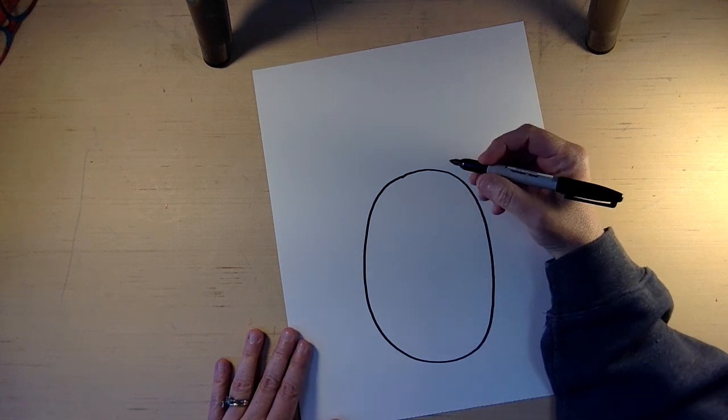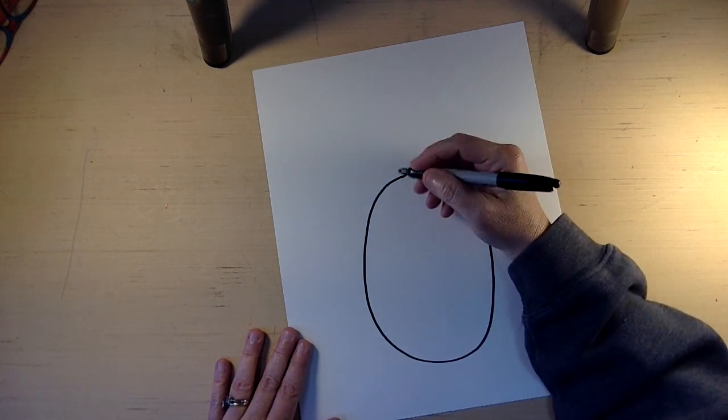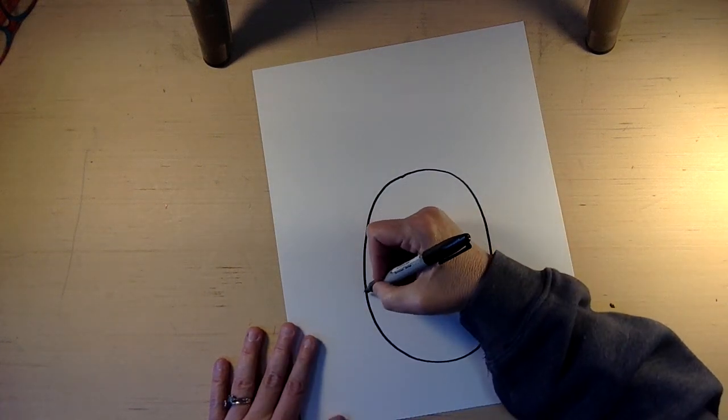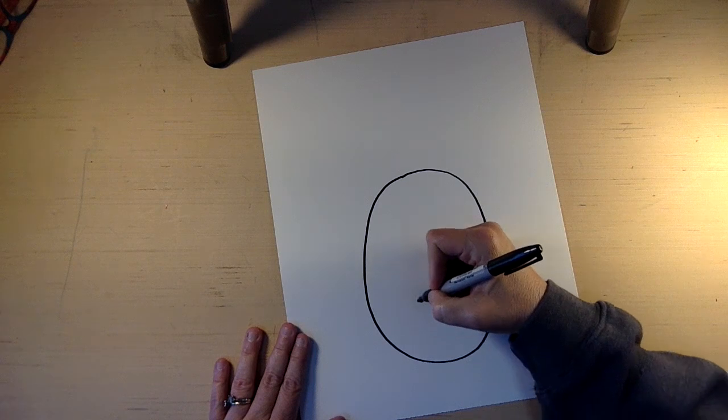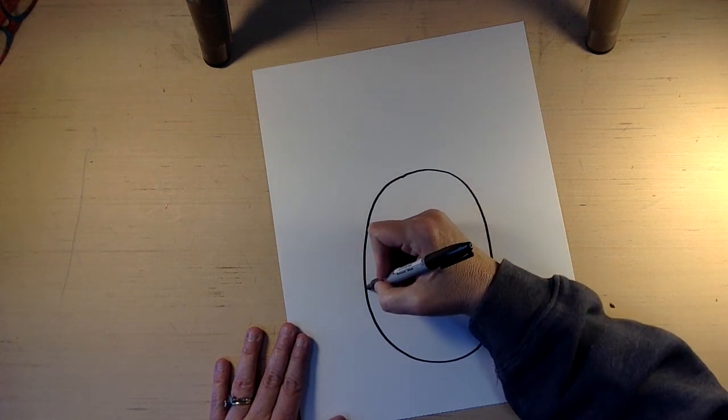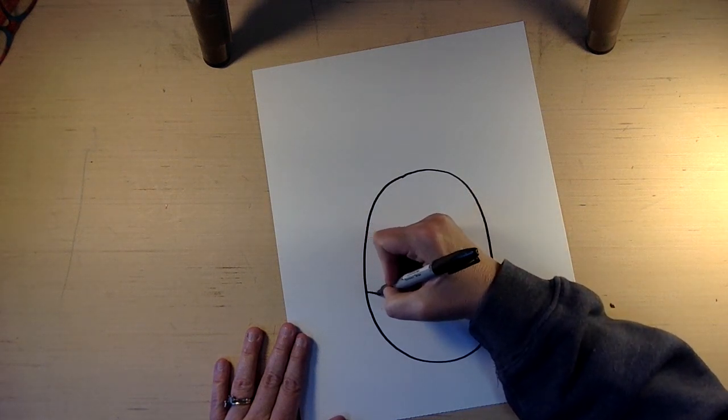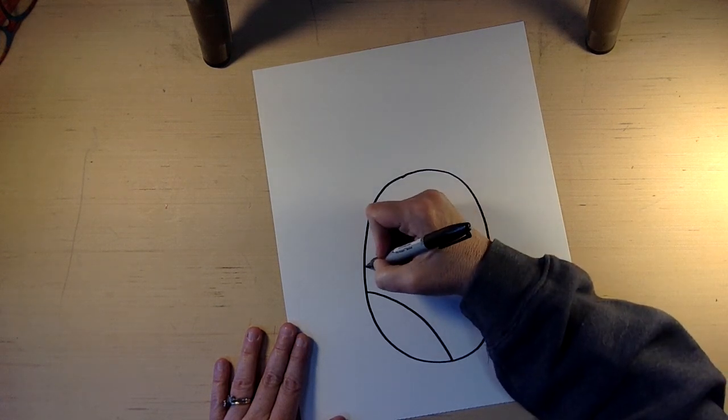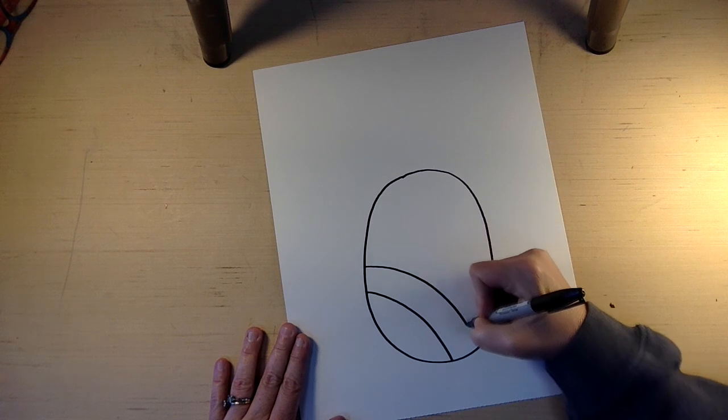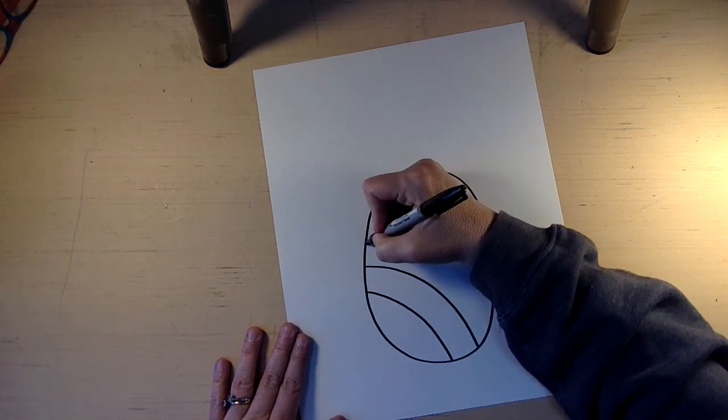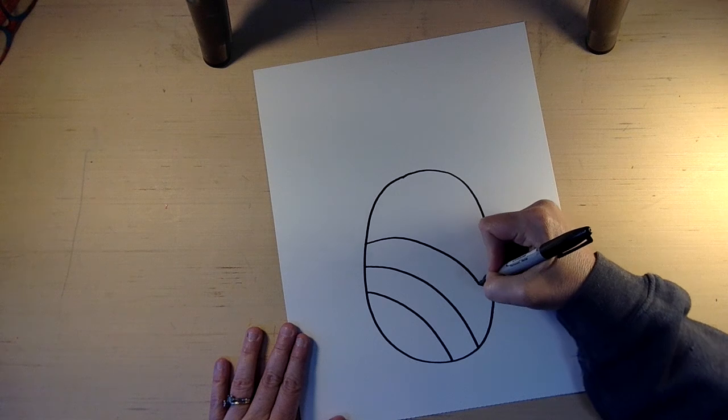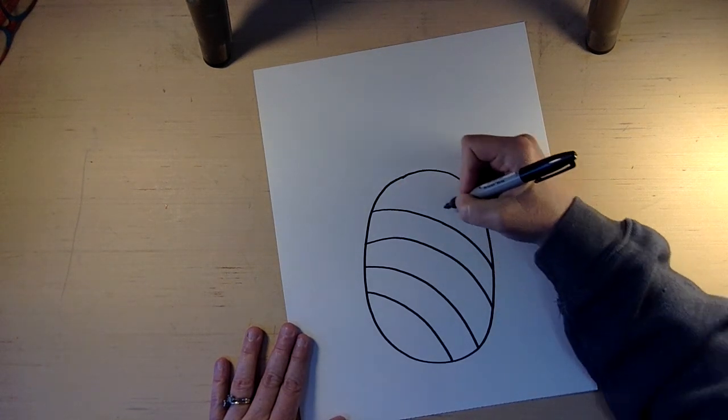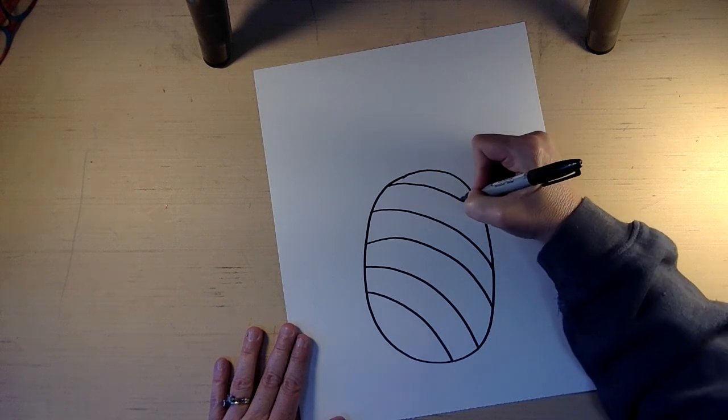So we have that shape. Now we want to make our pineapple look round, and to do that we're going to curve our lines. A pineapple has a really pretty pattern on it, so we're going to curve our lines. We're going to curve another one. See that? And then we're going to curve, and curve, and curve.